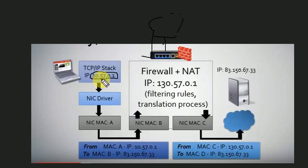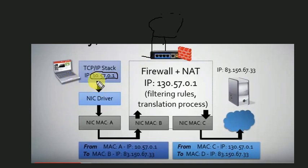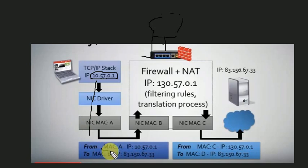You cannot reach Google.com with a private IP because this is a non-routable IP address. So, my packet goes through the NIC driver, then through the TCP/IP stack, then back to the NIC driver. The NIC driver adds a MAC address in the packet header.